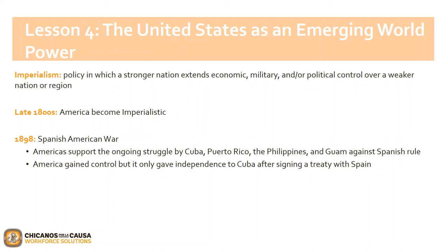They declared war on Spain because of Spain's mistreatment of Cuba. After winning the war, the United States gained control of Cuba, Puerto Rico, the Philippines, and Guam. However, the United States only granted independence to Cuba, which led to controversial conflict and eventually the Philippine War. We still have two major wars to cover — let's move on.